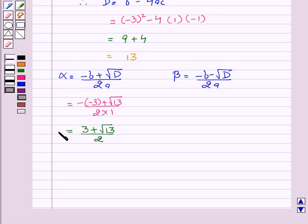Similarly, we will calculate the value of beta. On substituting the value, we get beta equal to minus of minus 3 minus square root of 13 upon 2 into 1. This gives beta equal to 3 minus square root of 13 by 2.